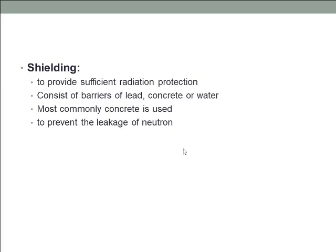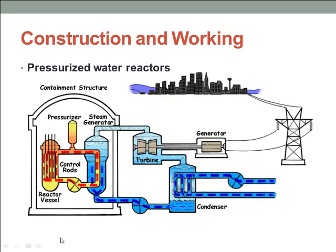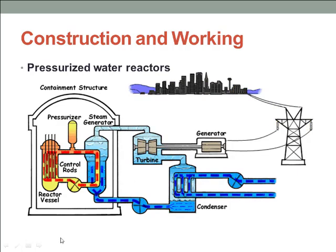Now let's discuss the working of the pressurized water reactor. In the pressurized water reactor, fuel in the reactor vessel is engaged in an efficient chain reaction which produces heat, heating the water in the primary loop by thermal conduction through the fuel cladding.